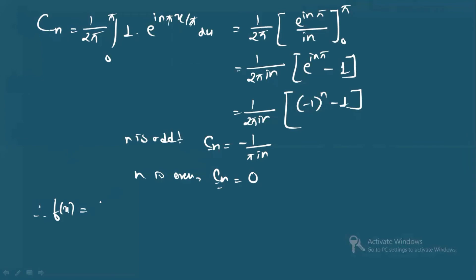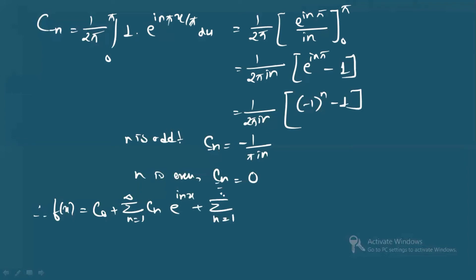Now we write out the full series: f(x) = c₀ + summation from n=1 to infinity of cₙ e^(inx) + summation from n=1 to infinity of c₋ₙ e^(−inx). Since l = π, the l cancels and we have e^(inx) and e^(−inx) terms respectively.